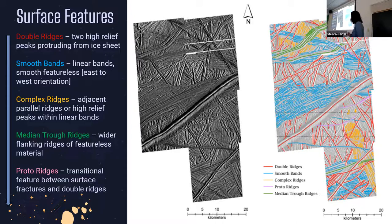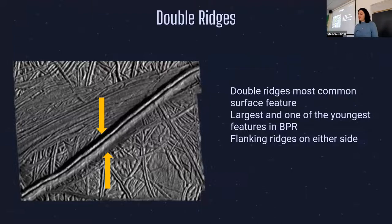And then our next most common were smooth bands which are just linear bands with smooth and featureless material and they normally have like an east to west orientation, and those are the blue, all of the blue lines. And then complex ridges, they're just adjacent parallel ridges or high relief peaks within linear bands and you can see all those outlined in orange. Median trough ridges, they're wider flanking ridges of featureless material and all those are in green. And then finally last but not least are the proto ridges which are just transitional features between surface fractures and double ridges and they're the least common. I actually only found two of those.